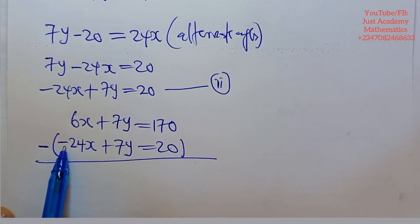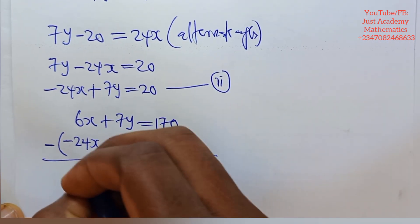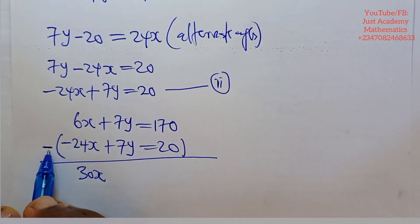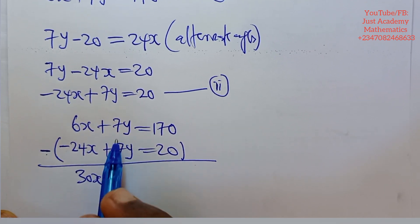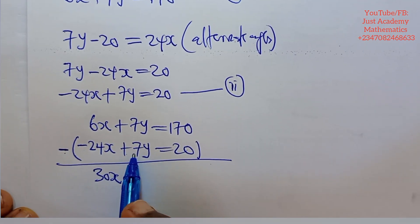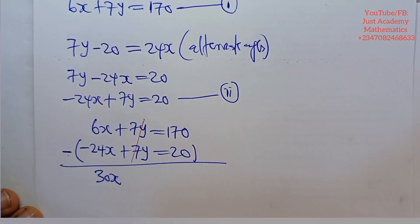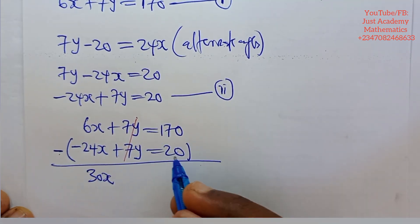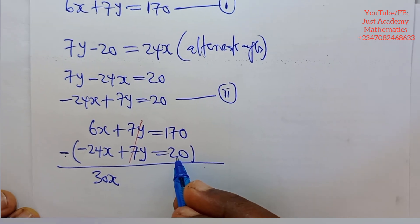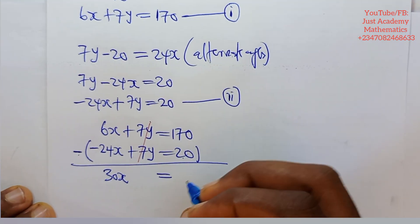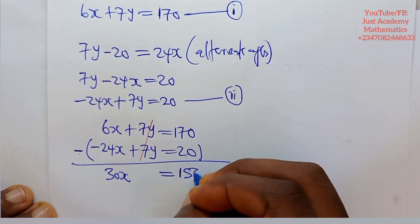So when minus times minus here is plus, this plus this will give me 30x. When minus times plus here is minus. Minus plus minus, plus 7y minus 7y will give me 0. You eliminate. When this minus times 20 is minus 20, 170 minus 20 is 150.